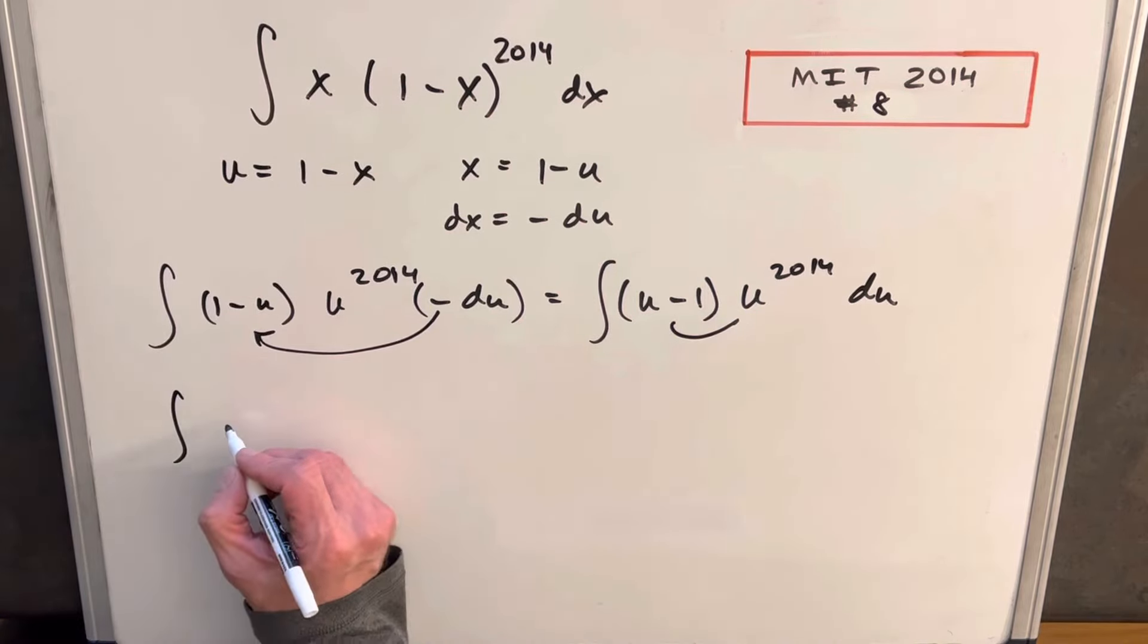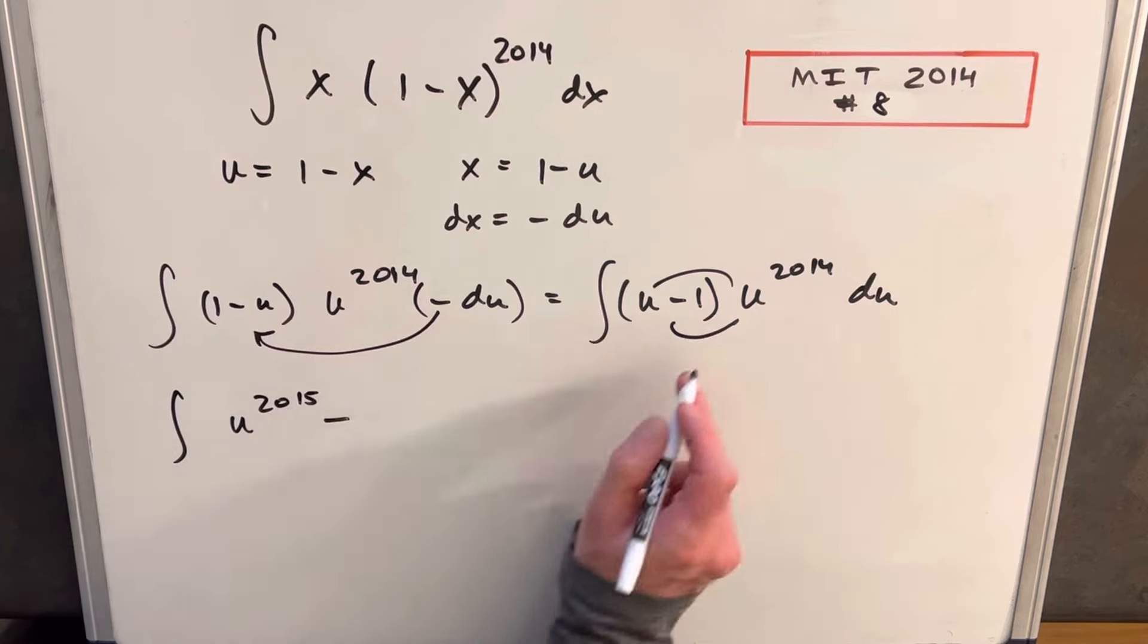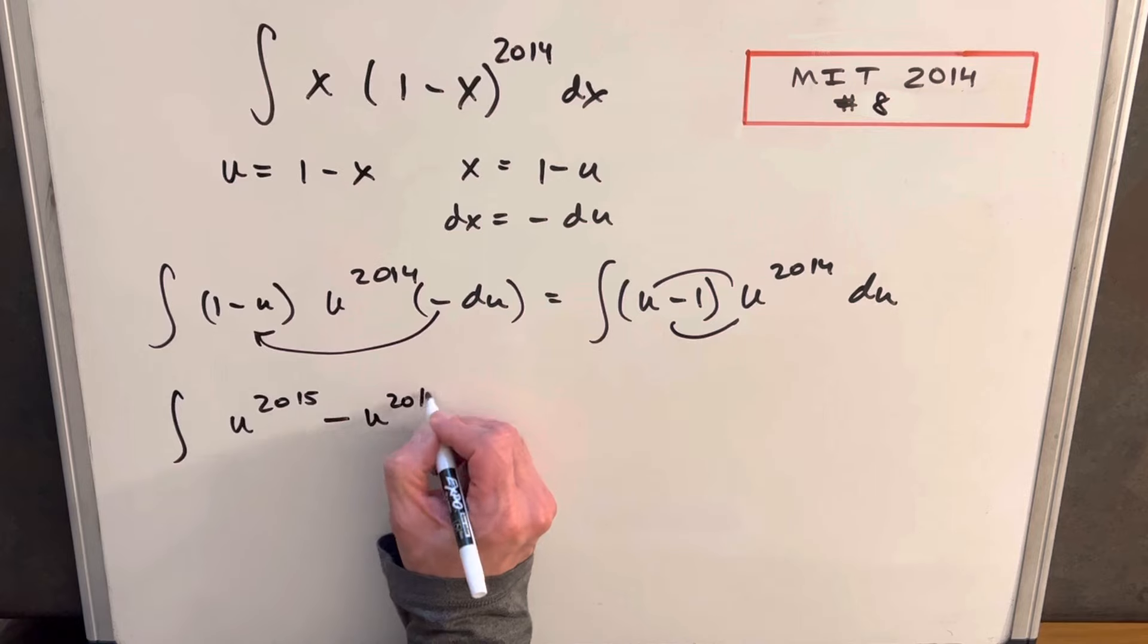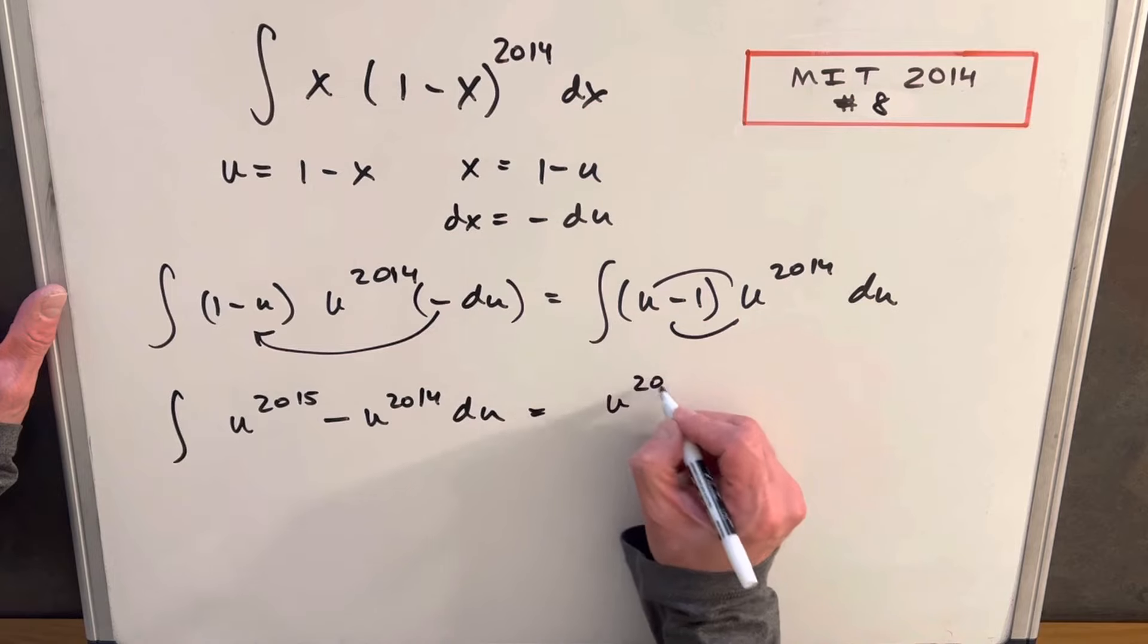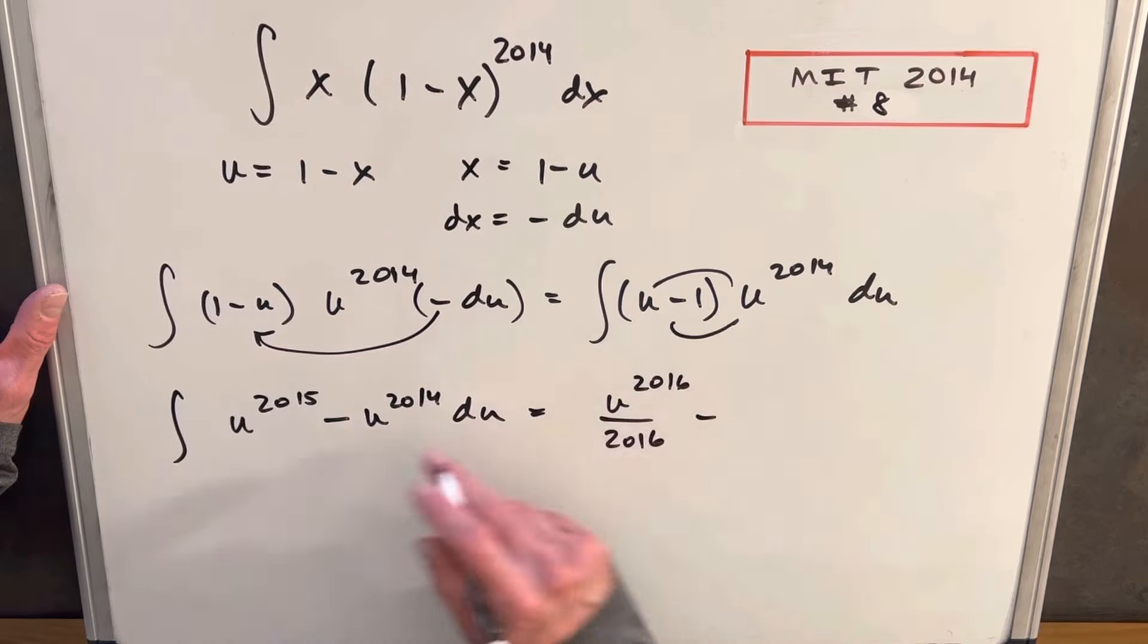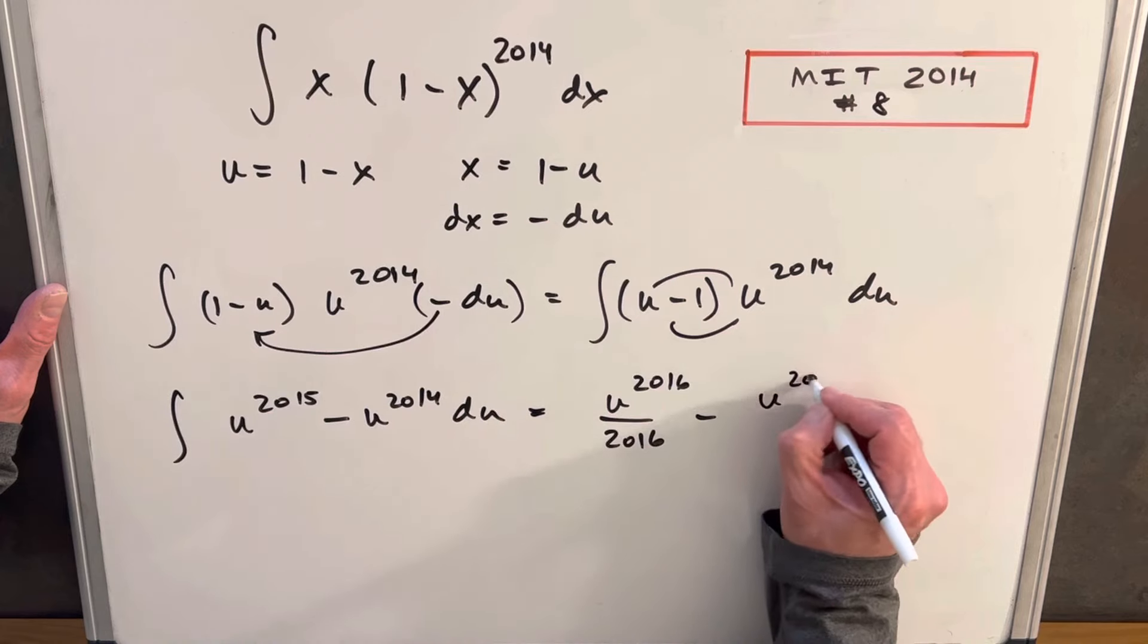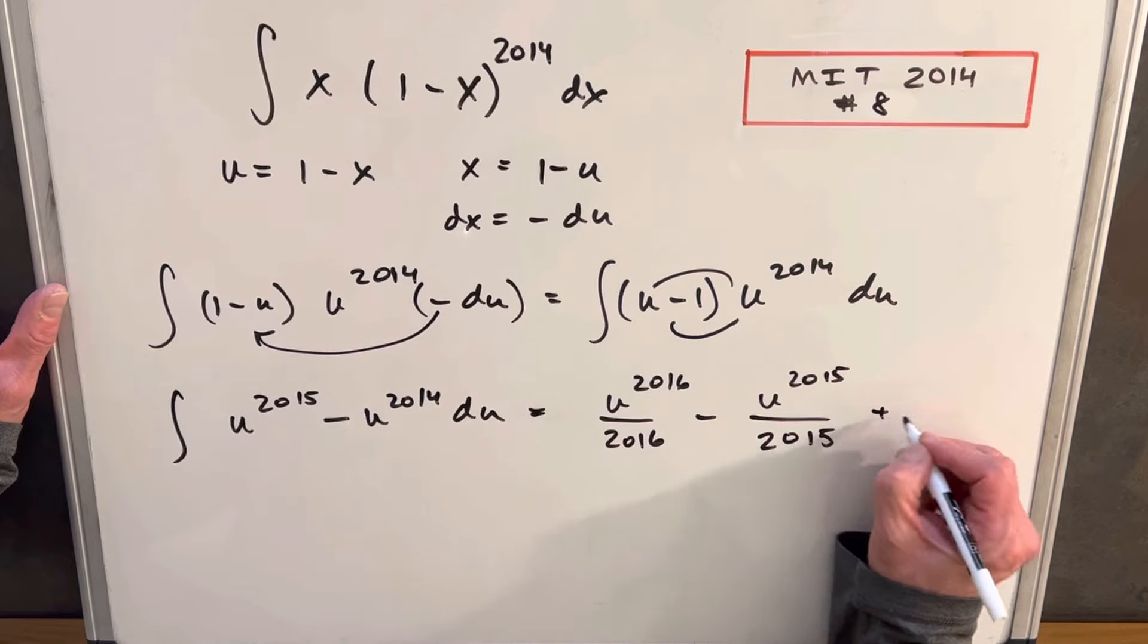So we're going to have, multiplying the first term, we're going to have u to the 2015 minus u to the 2014. And we're set up perfectly for the power rule. So integrating this thing, the first term, we're going to have u to the 2016 over 2016 minus, here we're going to have u to the 2015, just using the power rule, over 2015 plus c.